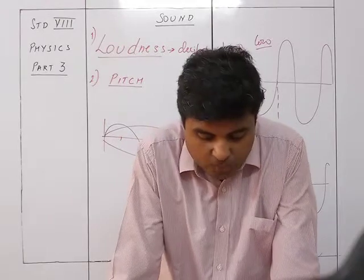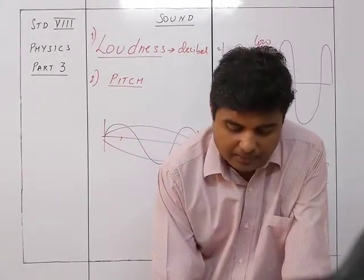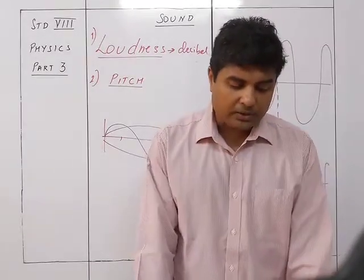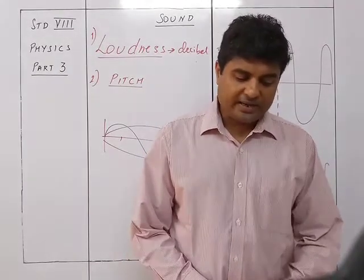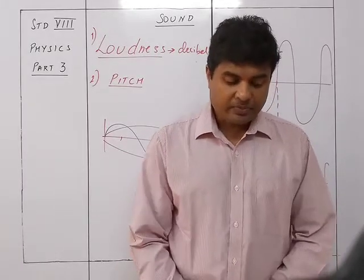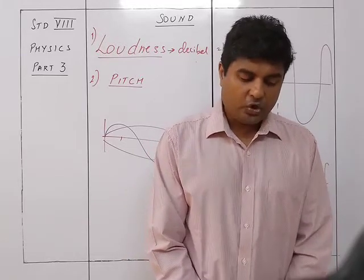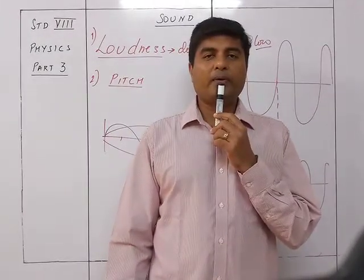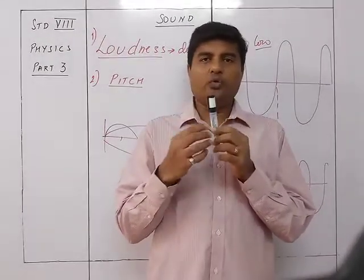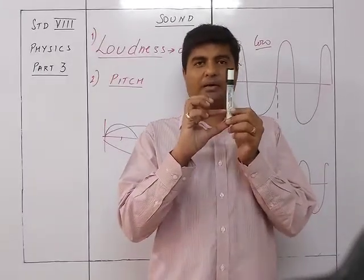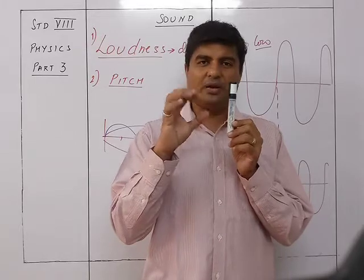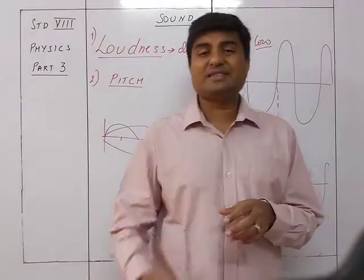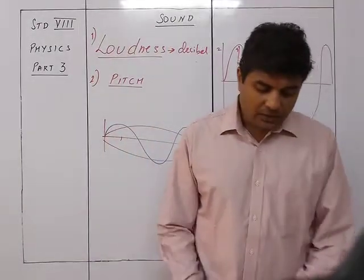Take a test tube with a little water and blow air into it by placing your lips on the mouth of the tube — you will hear a flat sound. Now add more water, decreasing the length of the air column each time. Each time you blow and hear the sound, you will notice it becomes more and more shrill.